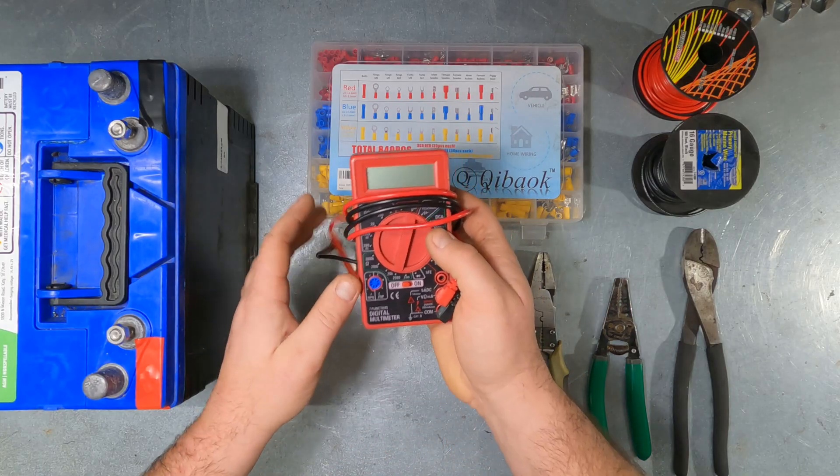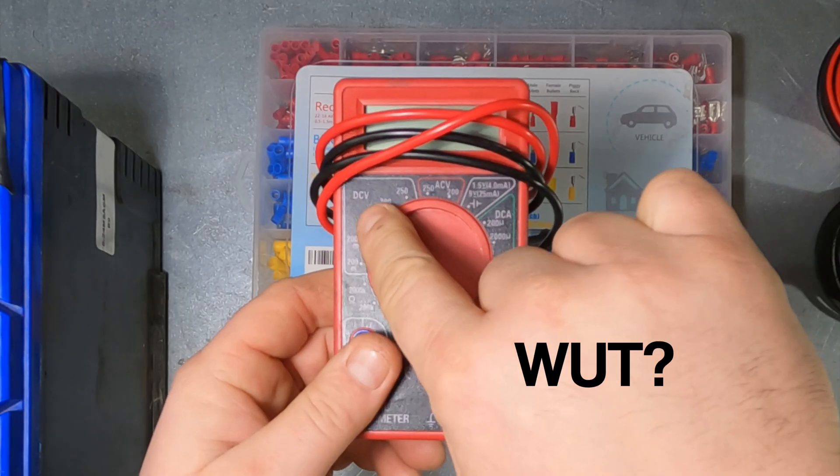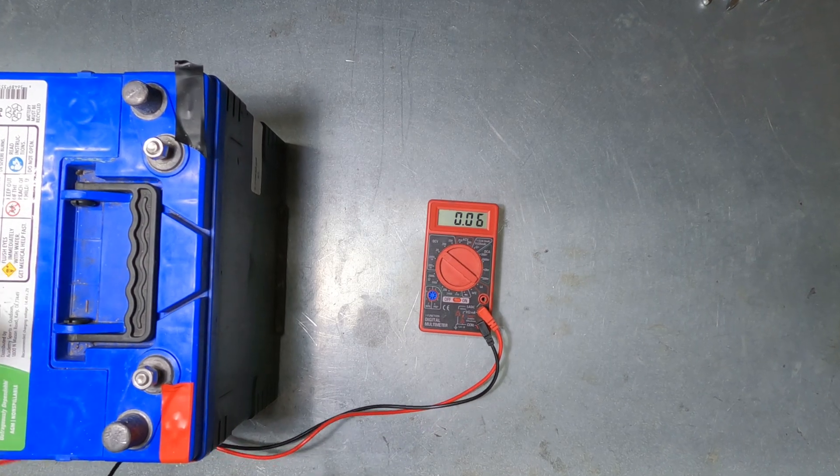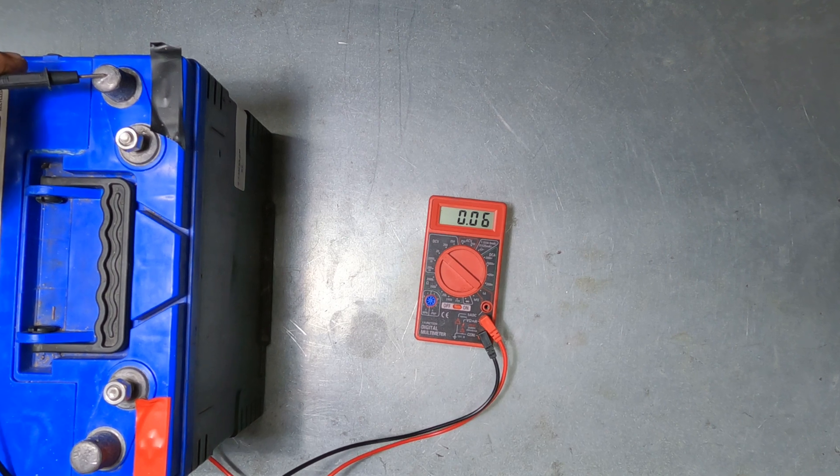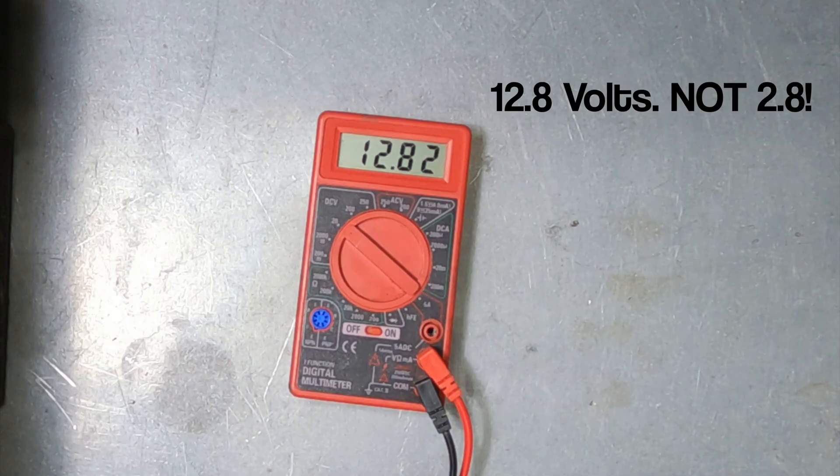Something else I recommend getting is just a cheap multimeter. And this one I can set to 20 volts direct current. We're not going to really use this in this video, but if you need to test circuits, it's a really cheap way to do so. Negative to negative, positive to positive, and that's a charged battery, 12.8 volts.